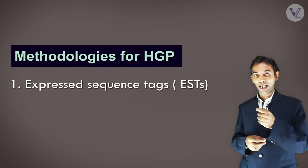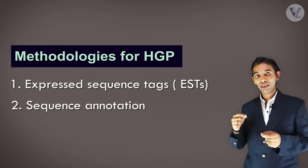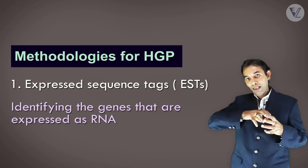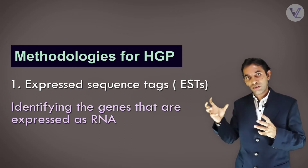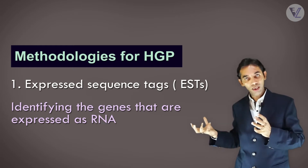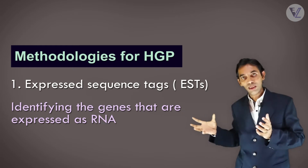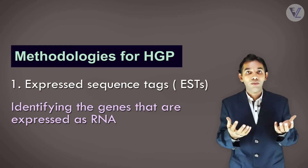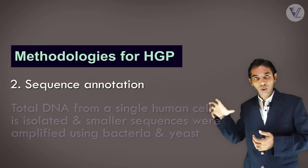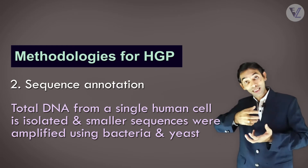Now, what were the main methodologies adopted to find out the sequence of the human genome? There were two methodologies adopted. One was Expressed Sequence Tags, or ESTs, and the other being Sequence Annotation. Expressed Sequence Tags are those in which the identification of all genes that were expressing RNA was done — that is, DNA copied into RNA. The genes expressing RNA were identified under this methodology, known as ESTs.